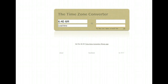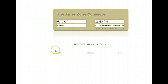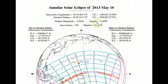Just type 'time zone converter dot com.' This is a very good program. You can convert the time — for example, my local time in Houston is 6:40 AM, which is Central Time. If we convert that to UTC (Coordinated Universal Time), it means that on Universal Time it will be 11:40 AM.